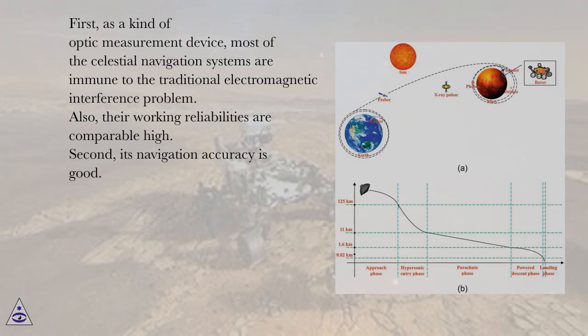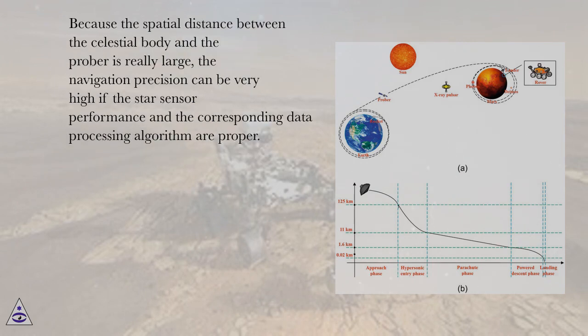Second, its navigation accuracy is good. Because the spatial distance between the celestial body and the prober is really large, the navigation precision can be very high if the star sensor performance and the corresponding data processing algorithm are proper.